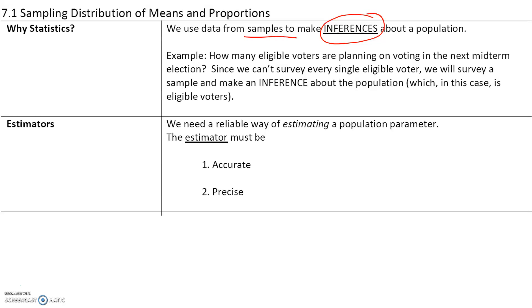For example, if you wanted to know how many eligible voters are planning on voting in the next midterm election, we can't survey every single eligible voter — that'll just take too long. So we will survey a sample. Let's say we survey 1,000 people. We use data from the sample to make an inference about the population, which in this case is all eligible voters.